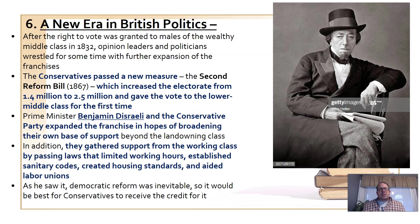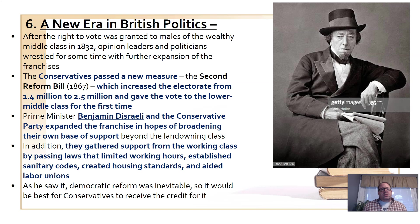Just as Bismarck tried to steal the socialists' thunder through social welfare programs, so too did the conservatives in Great Britain. They passed the Second Reform Bill of 1867, which expanded the voting block and moved closer to universal male suffrage. This was led by the conservatives under Benjamin Disraeli, who served as prime minister. In the following year's election of 1868, the liberals took control of Parliament and appointed a new prime minister.